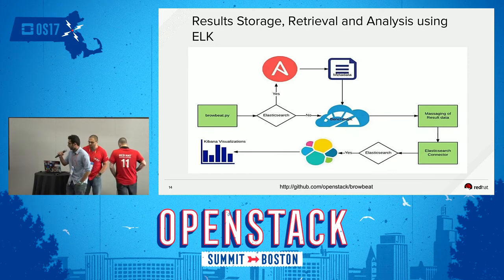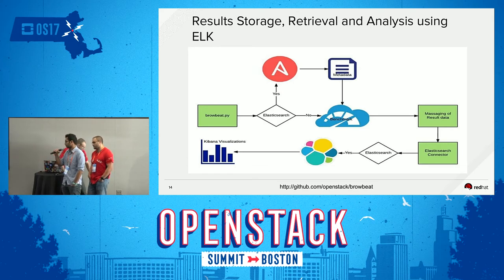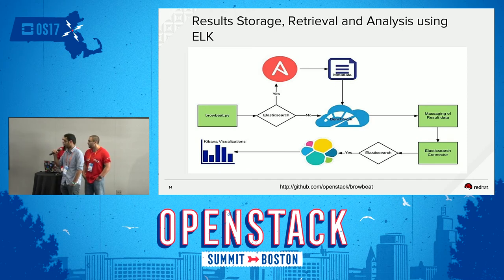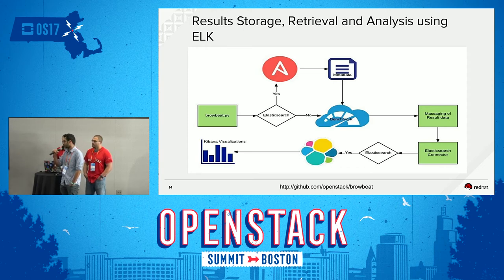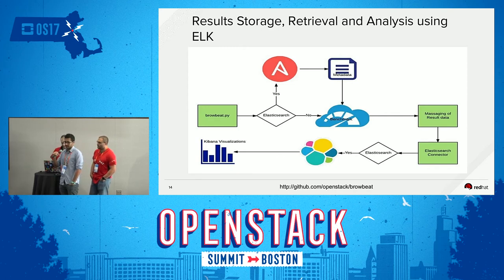The workflow for results storage, retrieval, and analysis — the most important part for performance analysis — is: you run Browbeat, run the workload you want like Rally, Shaker, or PerfKit. There's a config option for Elasticsearch; if you want to send data there, you turn it on in the config file. Ansible then goes into all your nodes — controllers, computes — and gathers system facts like kernel and hardware.